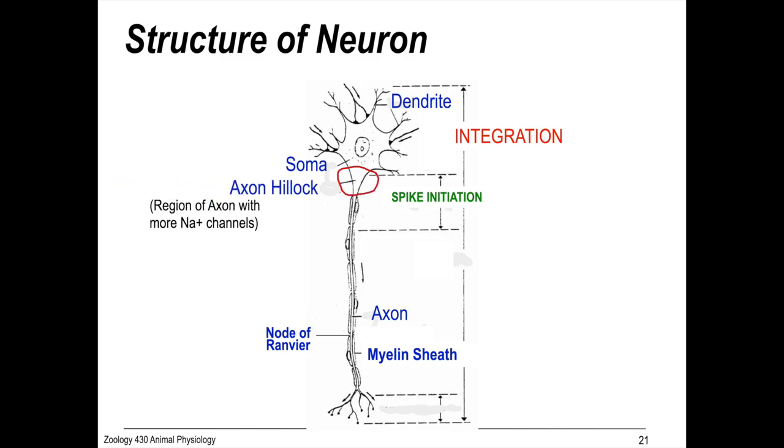It's a region of the soma that's rich in sodium channels, which makes it easier to meet threshold and for a spike to initiate down the axon. If that happens, the signal's rapidly conducted to the axon terminal where transmitters are secreted to the next axon across the synapse.